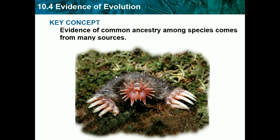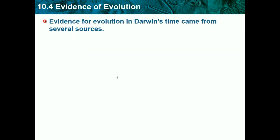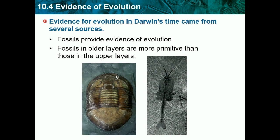Now we're on 10.4, evidence of evolution. Evidence of common ancestry among species comes from many sources. Fossils provided one piece of evidence. Fossils in older layers are more primitive than those in upper layers. For the sediment cliff image we saw, the bottom layers were older and the top layers were newer. He found that fossils in lower levels were more simple than those in upper levels, and you could tell how over time fossils got more and more complex, causing adaptation and evolution.